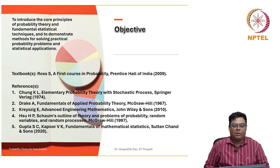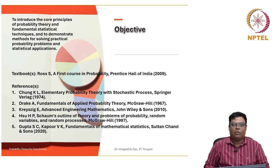We will follow some textbooks — A First Course in Probability by Ross. You may follow any other books also; there are many references given here. One reference is Kai Lai Chu's Elementary Probability Theory with Stochastic Process.